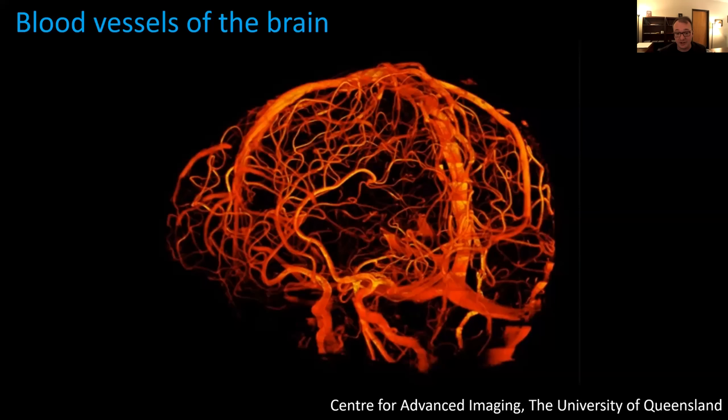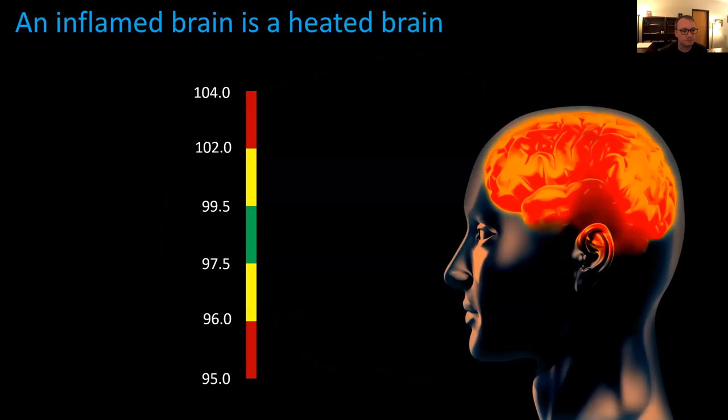What's found in ME-CFS is a decoupling of brain temperature from core body temperature. People with ME-CFS have a hot brain — hotter than it should be. Instead of around 99°F, it's something more like 100° or even 101°F. This technique allows measurement of brain temperature throughout the entire brain — a powerful way to quickly determine whether someone has a hyperthermic brain. The brain needs to stay within a very limited range of temperatures, roughly 97.5°F to 99.5°F for normal function.